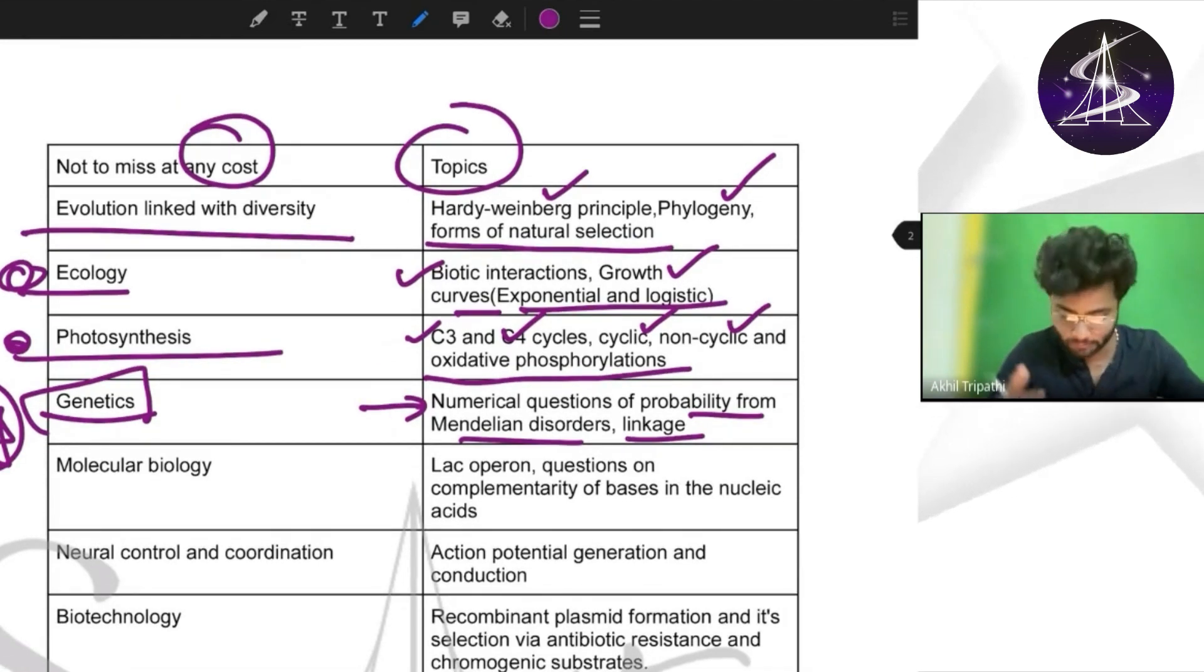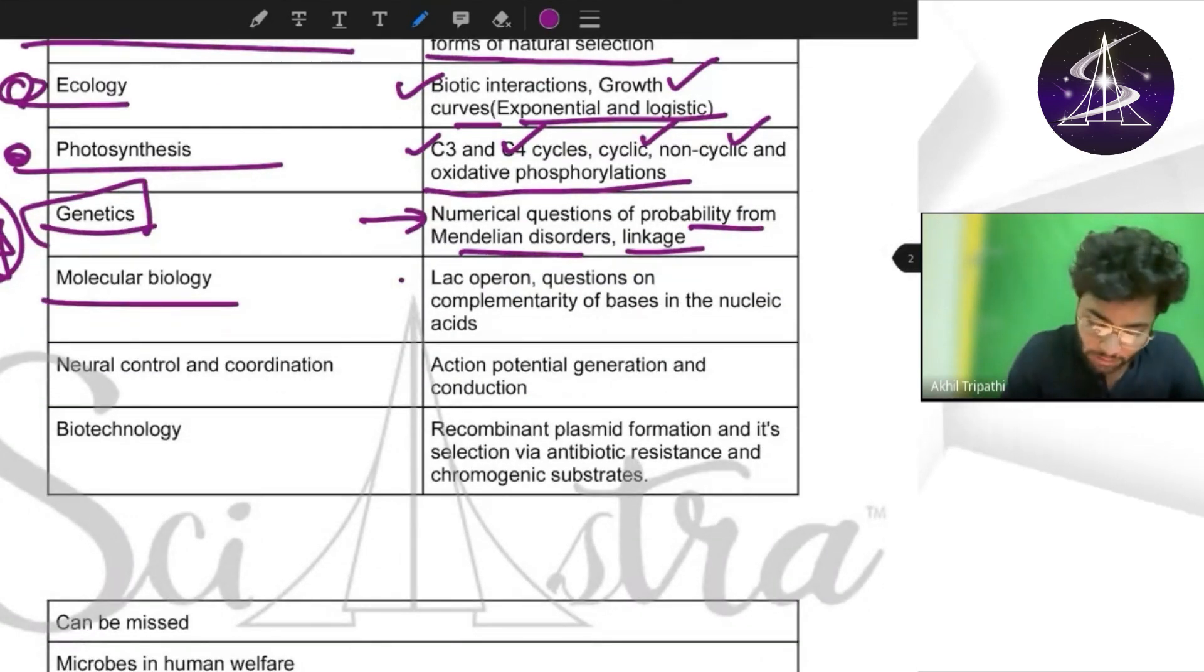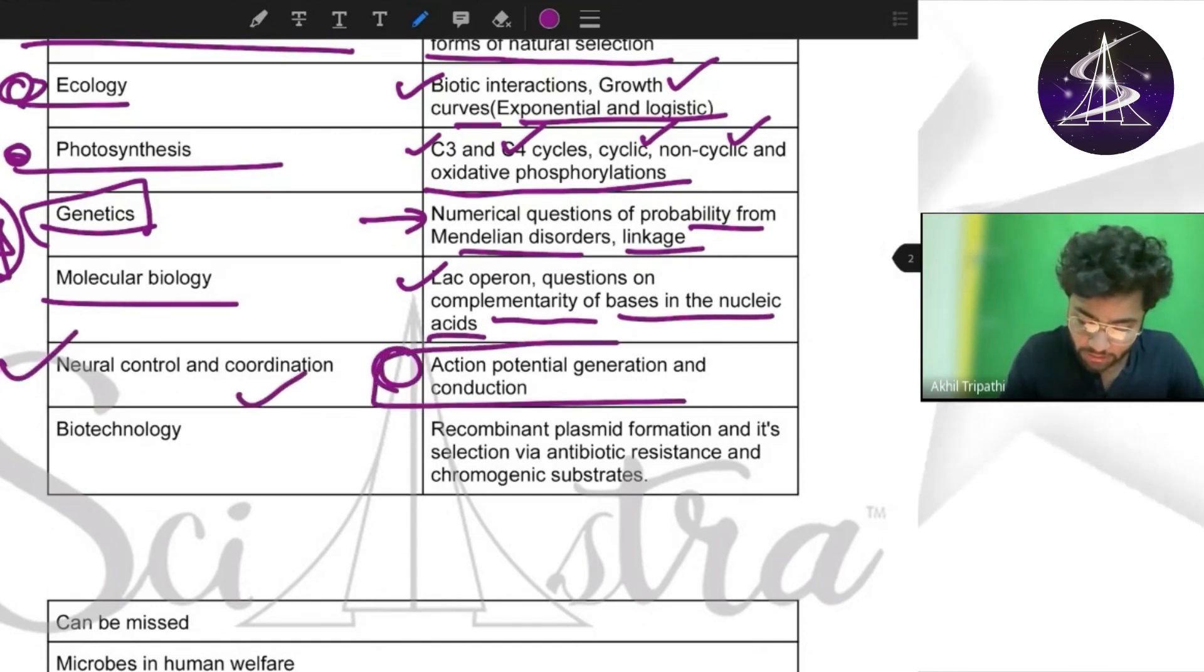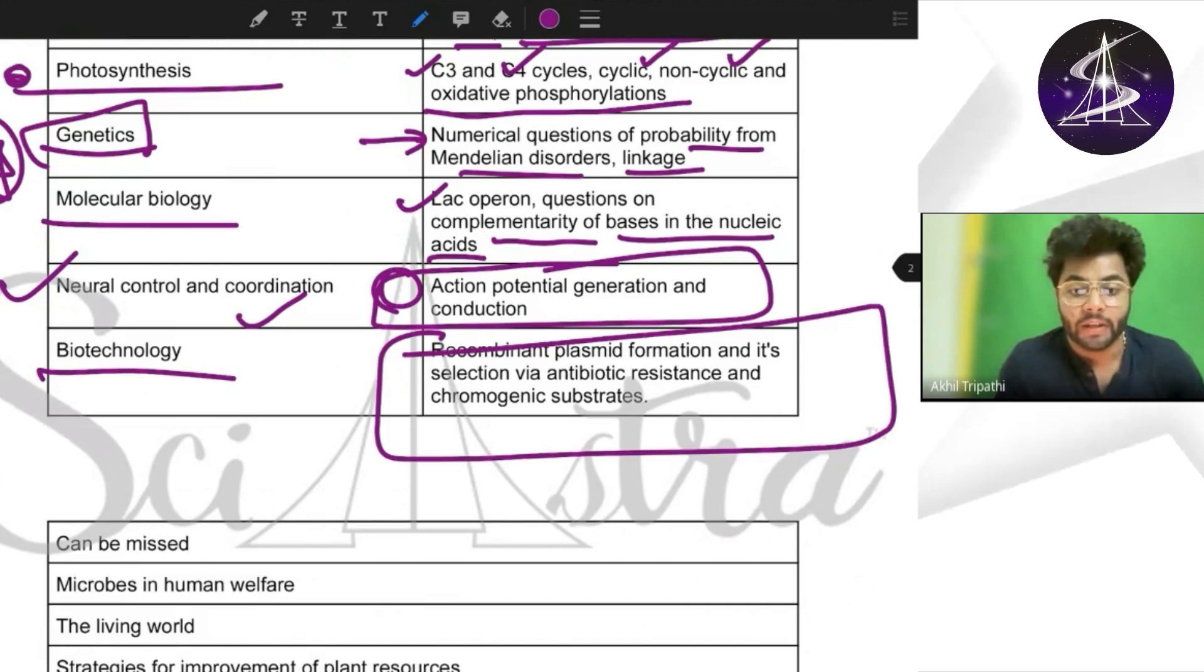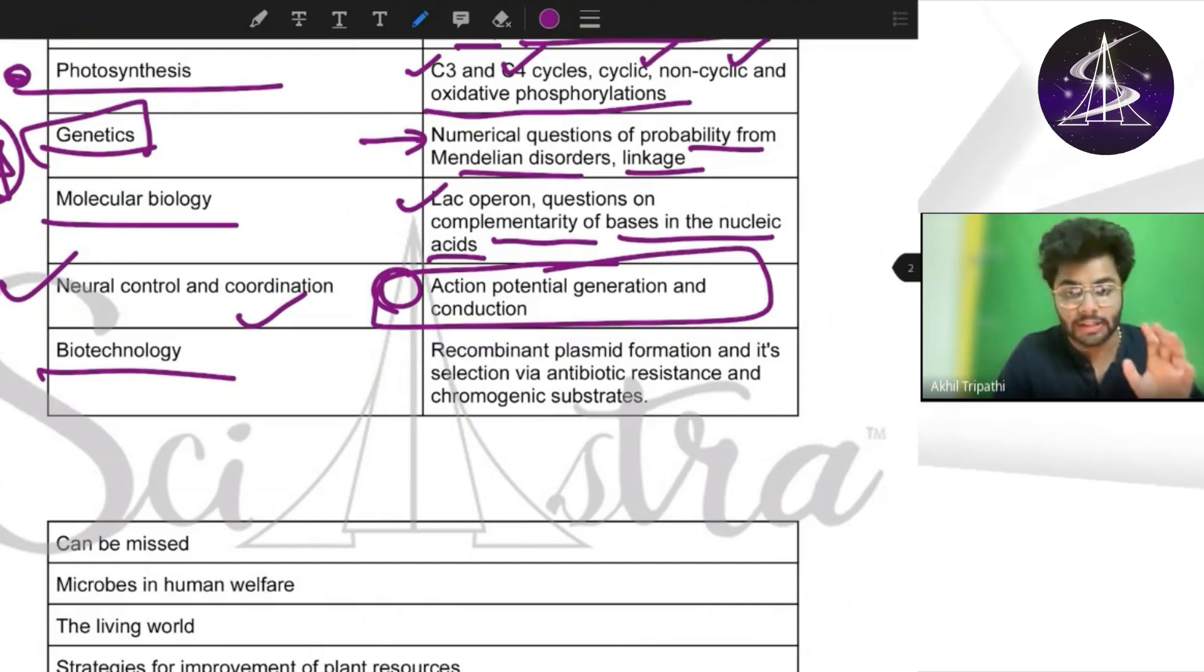Coming to molecular biology, lac operon questions on complementarity of bases in the nucleic acid - those questions are very important. Then neural control and coordination, action potential generation and conduction. Then comes biotechnology - recombinant plasmid formation, its selection via antibiotics resistance and chromogenic substrates. You see how specifically we have told you that recombinant plasmid formation and its selection via antibiotic resistance and chromogenic substrate.